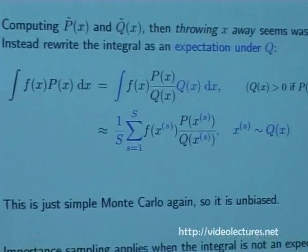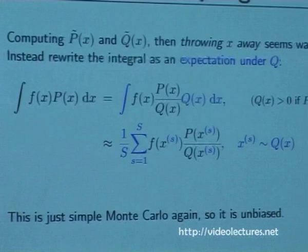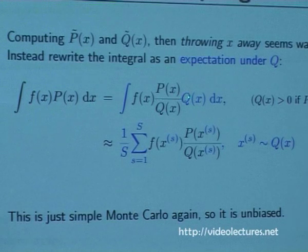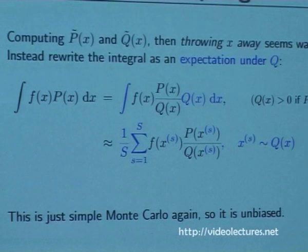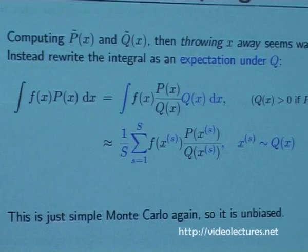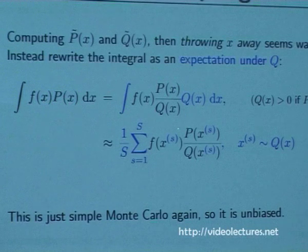There's a trick that means you never have to reject samples - importance sampling. If you're in a regime where you can't draw samples from the distribution you want to, but you can draw from some other distribution, importance sampling allows you to sample from the distribution you can actually use. You have an integral to solve, and you multiply and divide by Q - the distribution you can sample from - which is just multiplying by one. This is now an expectation under Q, and you just apply simple Monte Carlo: sample from Q and evaluate the rest of the integrand. What's nice is that your integral didn't even need to be an expectation in the first place - nothing about this relied on P being a distribution.